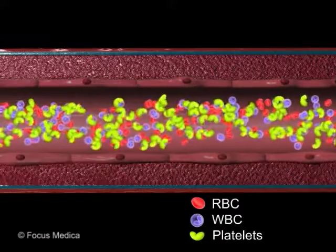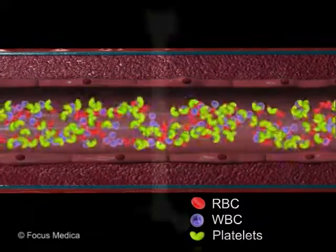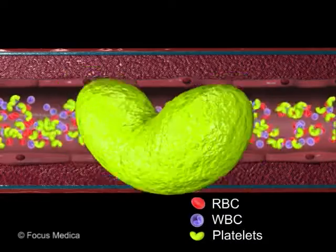Platelets, or thrombocytes, are blood cells that are important for blood clot formation. They originate from bone marrow cells and are small and irregular in shape.